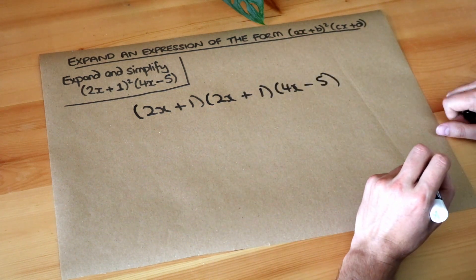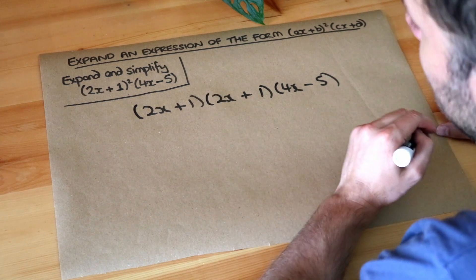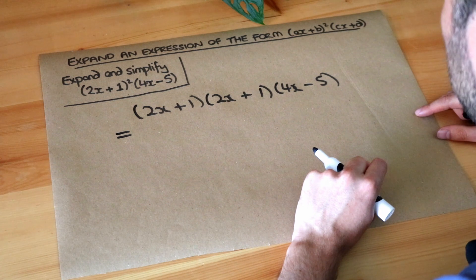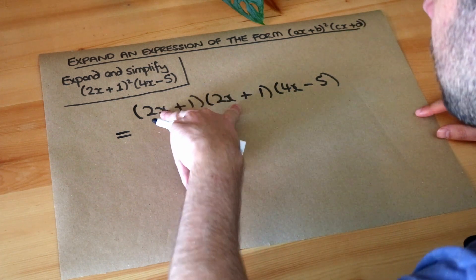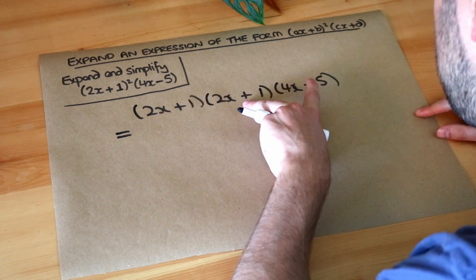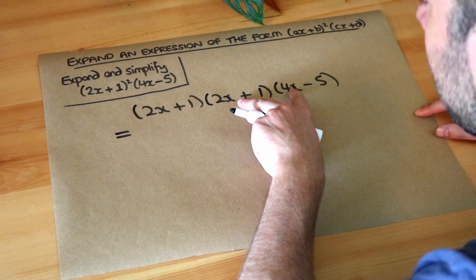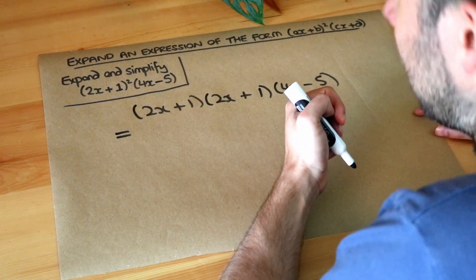So we need to multiply these three brackets and we've seen in a video before how we multiply three brackets. We just choose two of the brackets to multiply out first. So we could do this bracket times this bracket first or we could do this times this. Just by personal preference I do the second times the third first but I'm not sure it makes it any easier or harder.